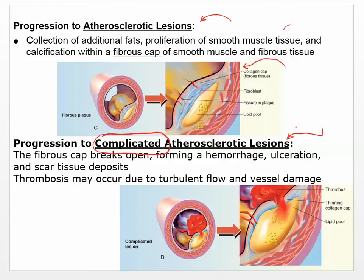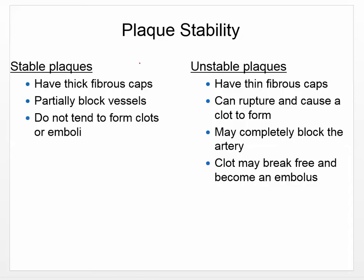A complicated atherosclerotic lesion is what leads to stroke and heart attack. A stable plaque has a thick fibrous cap, partially blocked vessels — not desirable, but less concerning because they don't tend to form clots or emboli. An unstable plaque has a thin fibrous cap, can rupture to cause that clot, and may completely block the artery, or that clot could break free and become an embolus.